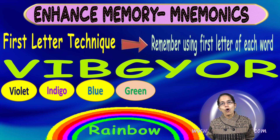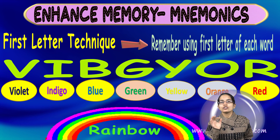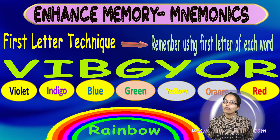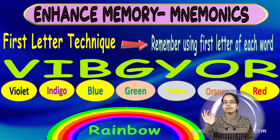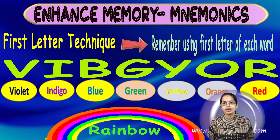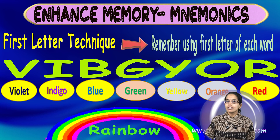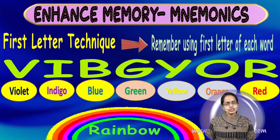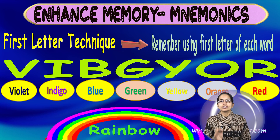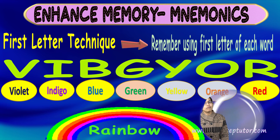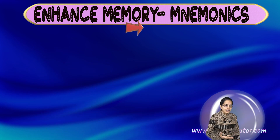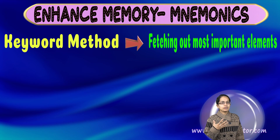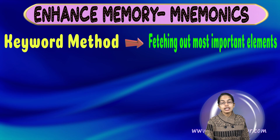For the rainbow colors — violet, indigo, blue, green, yellow, orange, and red — you take the first letter of each color: V for violet, I for indigo, B for blue, and so on. That is the first letter technique.